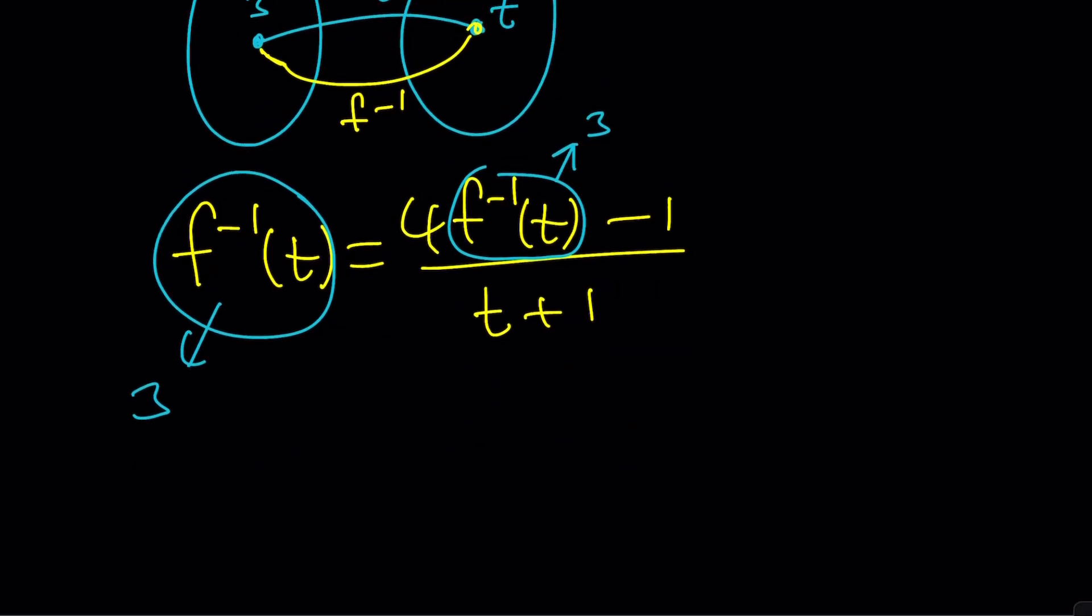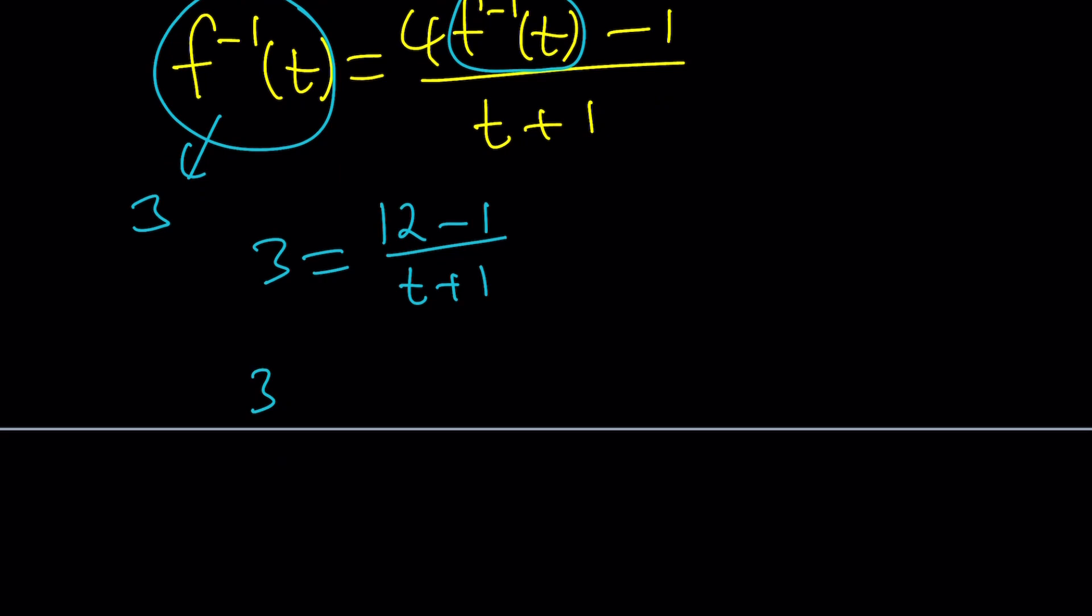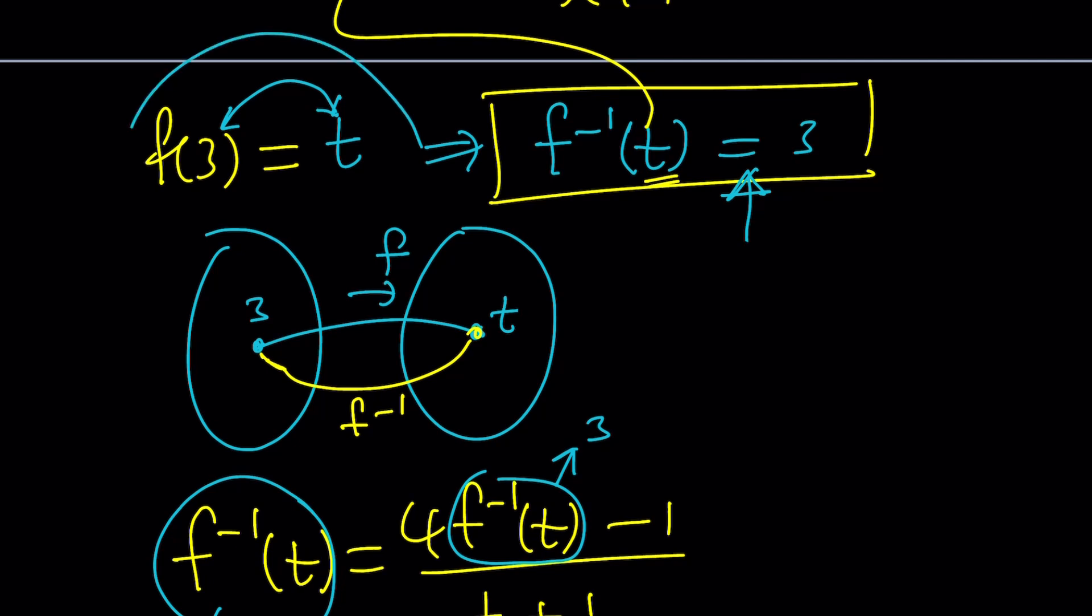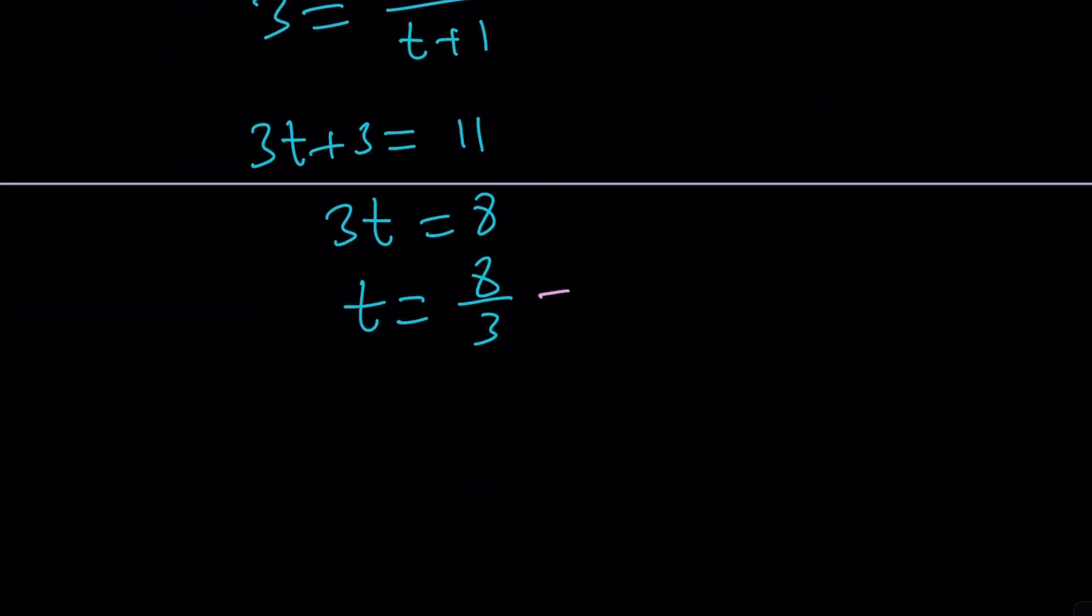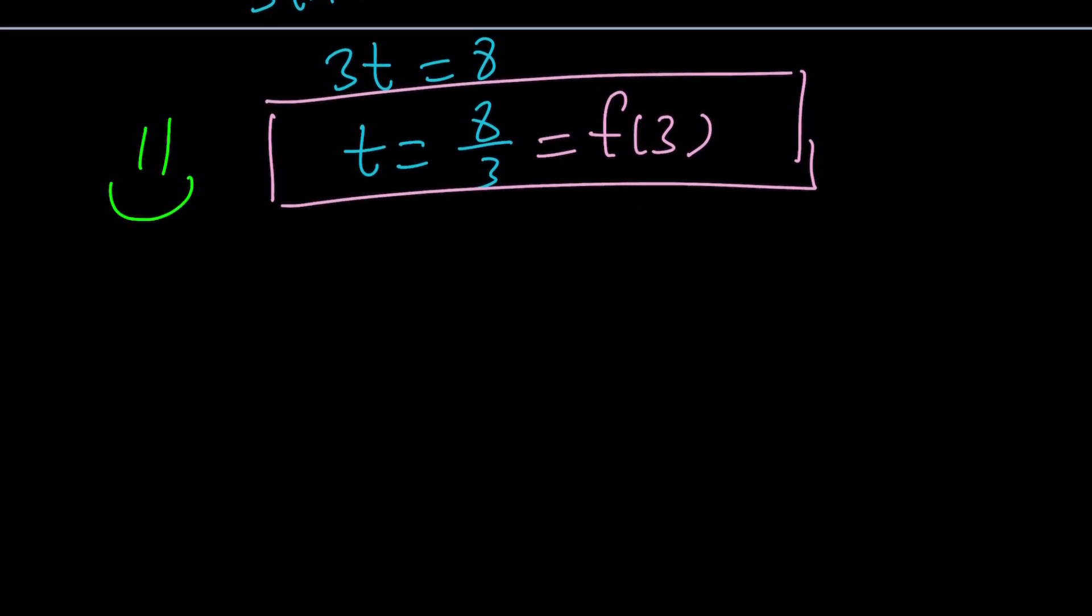So we get the following. 3 equals 12 minus 1 over t plus 1. And then 3t plus 3 is equal to 11. 3t is equal to 8. t is equal to 8 thirds. But what is t? t is f of 3, which is what we were trying to find. And we actually found it. So the answer is 8 thirds as before. So too bad WolframAlpha can't solve this problem, but human beings can, so we are better. Great. This brings us to the end of this video. Thank you for watching. I hope you enjoyed this. Please let me know. Don't forget to comment, like, and subscribe. I'll see you next time with another video. Until then, be safe, take care, and bye-bye.